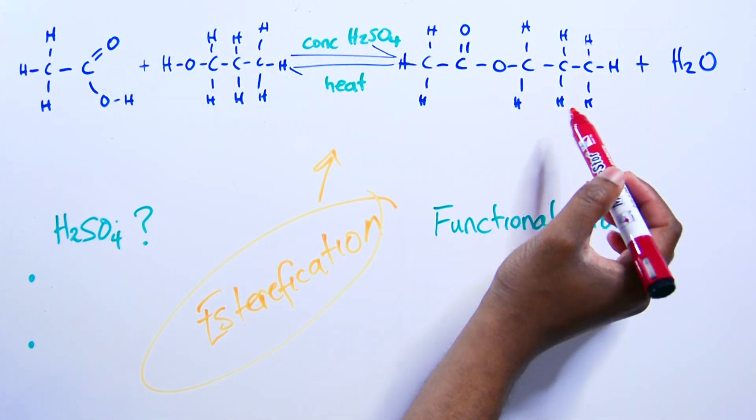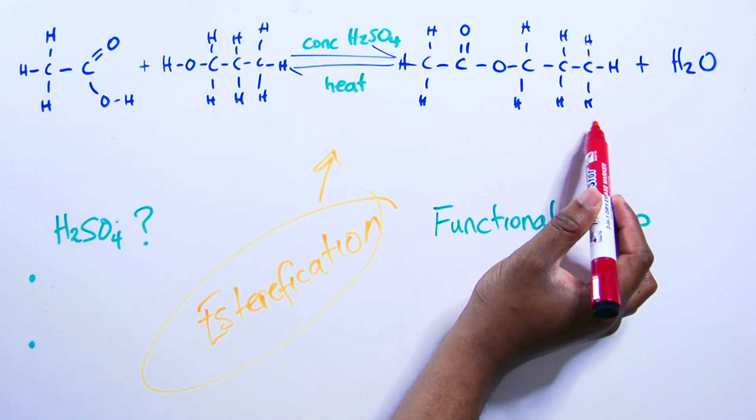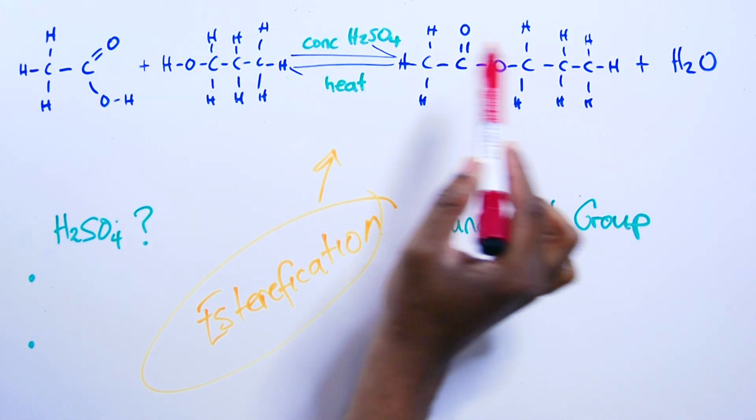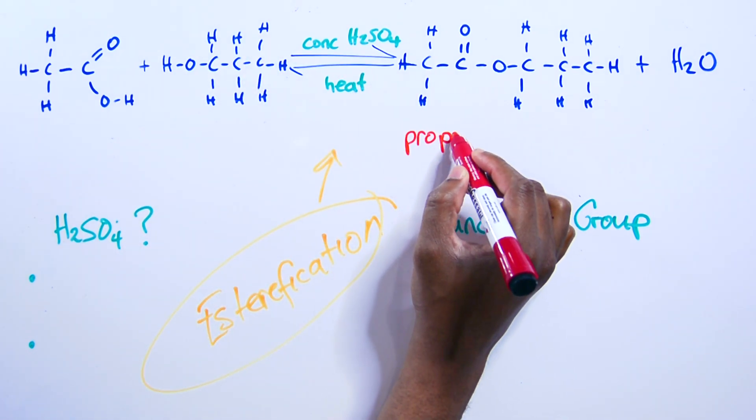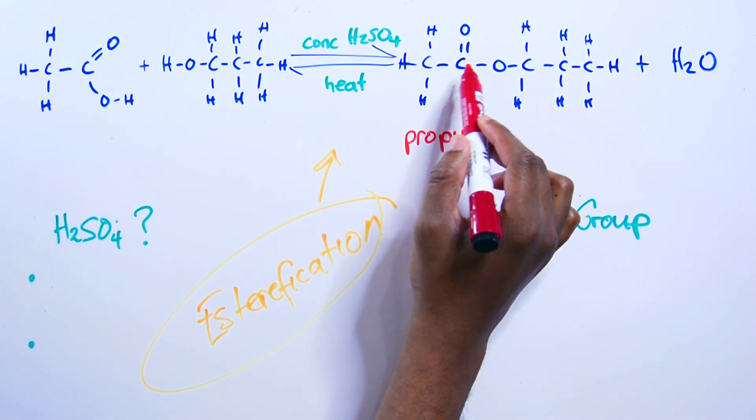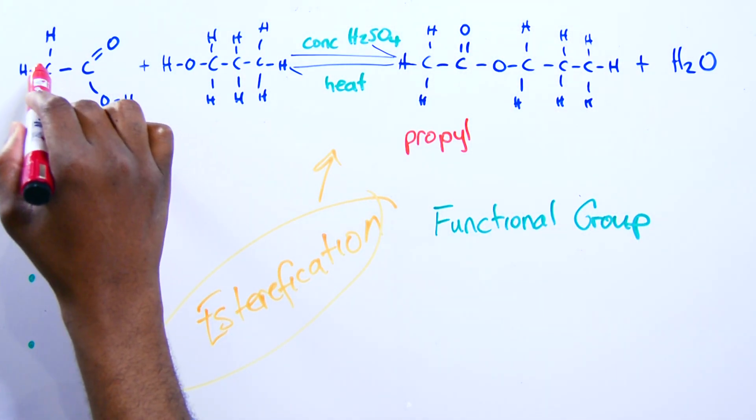But how do we name an ester? We name an ester using the alcohol part. So you see three carbons in the alcohol part. So that's propanol. So we're going to put propyl. Simple like that. Propyl. And then we put the acid part after.